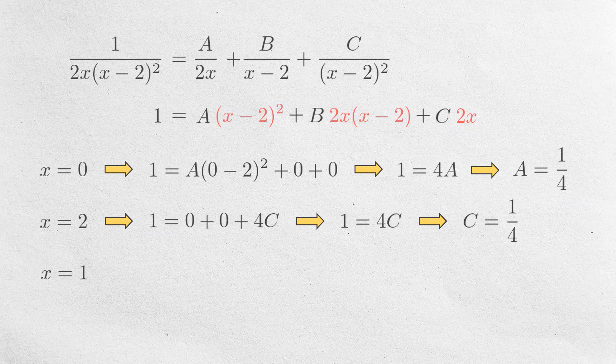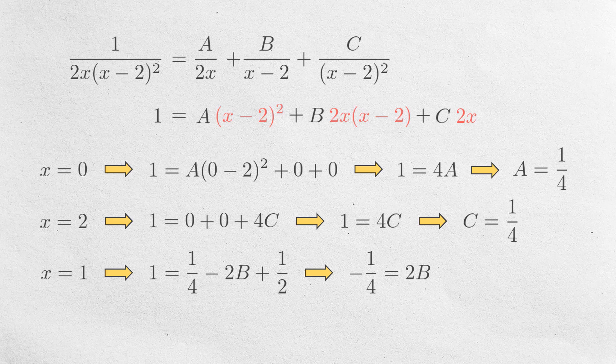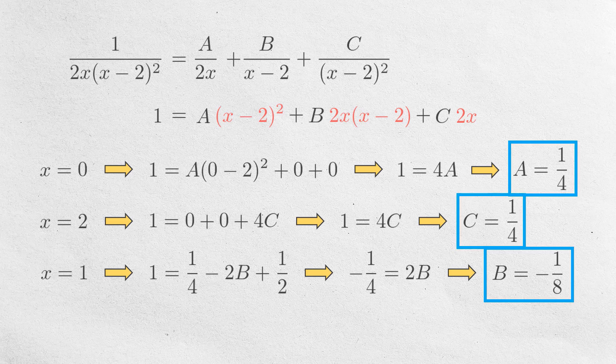We can also let x be 1 and substitute 1 fourth into A and C. After a little bit of calculation, we get B equals negative 1 over 8. So, we figure out all three constants.